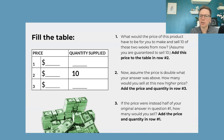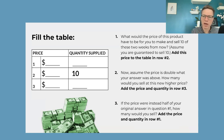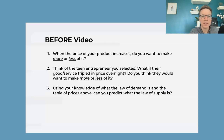The first question here is: what would the price of this product have to be for you to make and sell 10 of these two weeks from now? Basically, how much would you need to get to make it worth your while to make 10? Now assume the price is double — how many would you sell? If the price were half, how many? Again, this is to get students thinking about the supply curve.